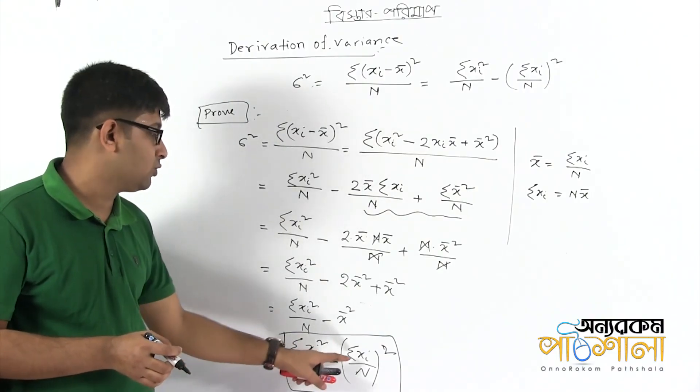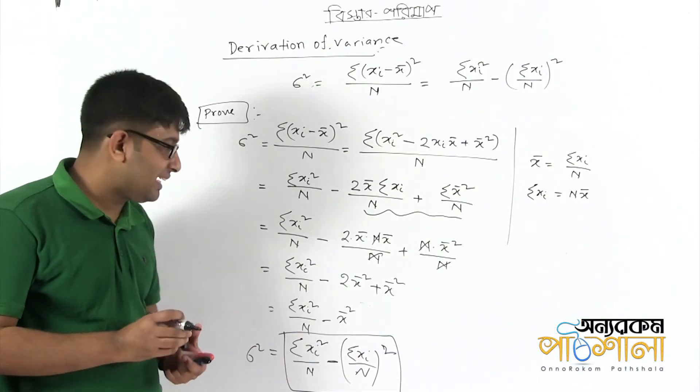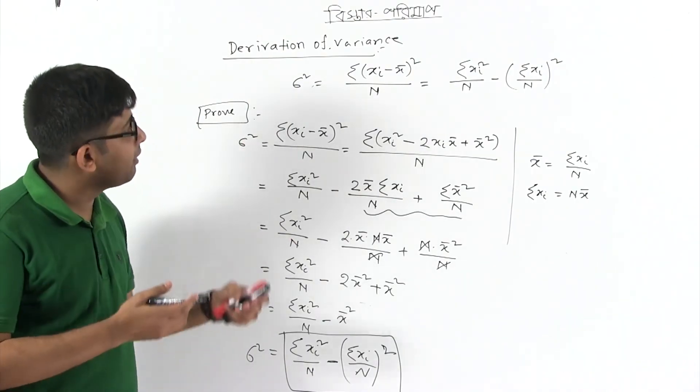For frequency distribution, we have fxi squared - summation of fxi. So if you understand this, you will be able to do similar problems.